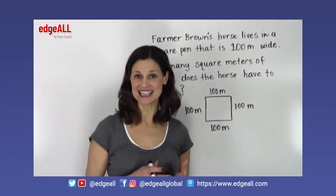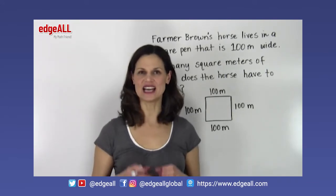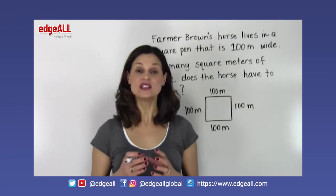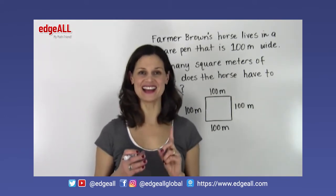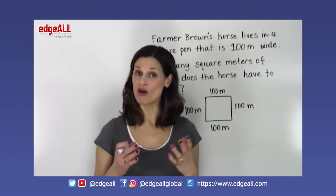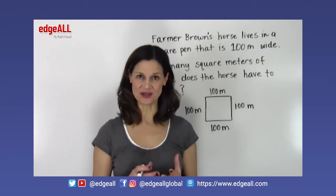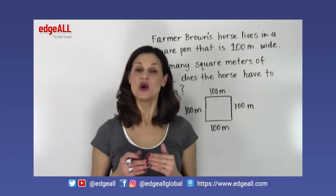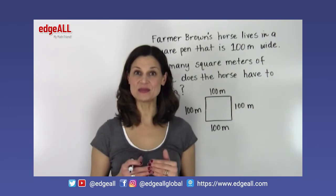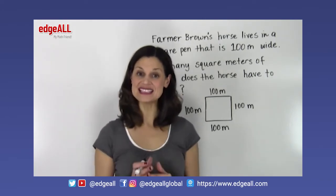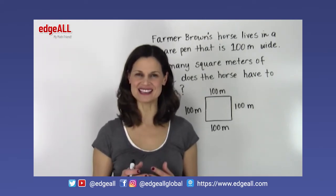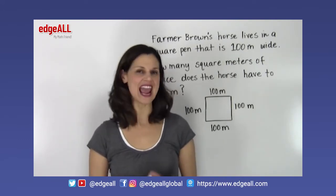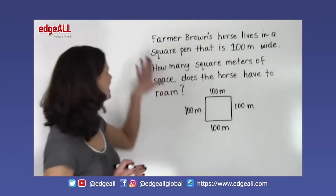If the base is equal to the height, the rectangle is called a square. To find the area of a square, you only need to know the length of one side, because all four sides are equal. This means that if we know the length of one side, we can calculate the area by multiplying that value by itself — also known as squaring.